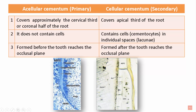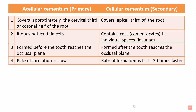The acellular cementum forms before the tooth reaches the occlusal plane, and the cellular cementum forms after the tooth reaches the occlusal plane. This image shows root development with the acellular afibrillar cementum and the cementoblasts — the cells that secrete cementum. Before the tooth erupts, acellular cementum forms; since cellular cementum is present at the apical portion, it only forms after the tooth has reached the occlusal plane.